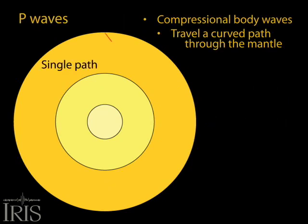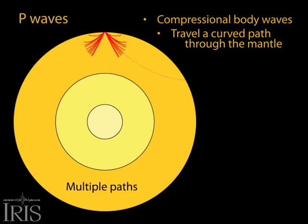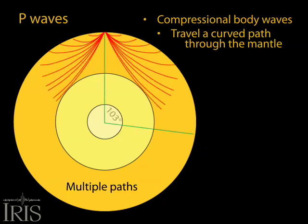P waves travel a simple curved path through Earth's mantle, refracting along layers at depth and return to the surface at about the angle that they left the epicenter. P waves arrive at seismograph stations up to 103 degrees from the epicenter.